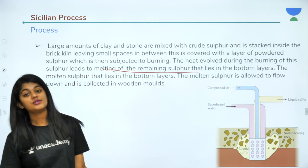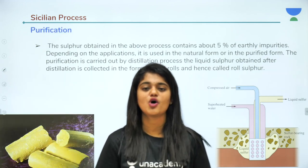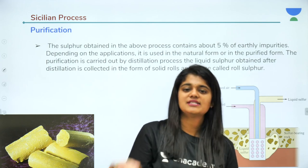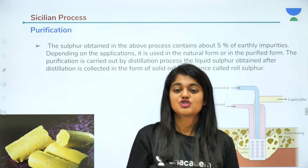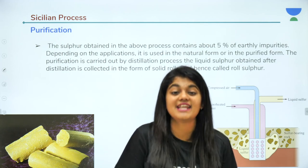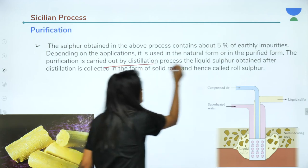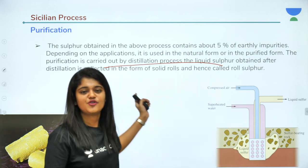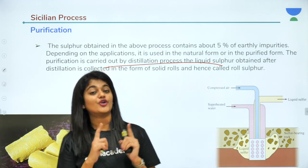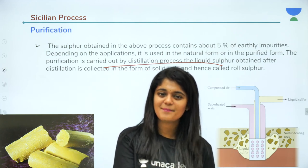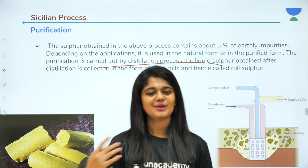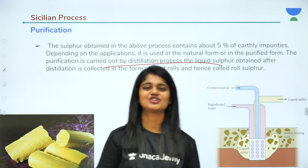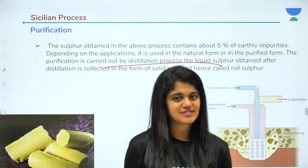The heat evolved during burning causes the remaining sulfur in the bottom layers to melt. This molten sulfur flows down and is collected in wooden molds. The collected molten sulfur contains about 5% earthly impurities, so it is purified by distillation. The liquid sulfur obtained after distillation is pure and collected as solid rolls — hence called 'roll sulfur'. This is the Sicilian process of extraction.